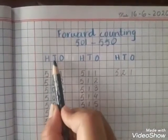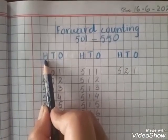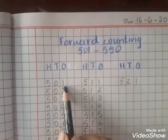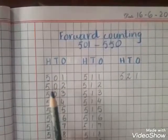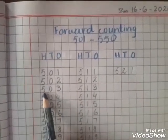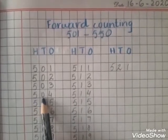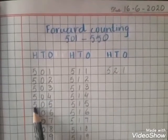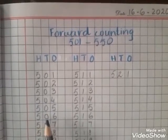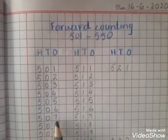Do you know what is meant by H T O? O stands for ones, T stands for tens, and H stands for hundreds. So we have: five hundred and one, five hundred and two, five hundred and three, five hundred and four, five hundred and five, five hundred and six, five hundred and seven, five hundred and eight, five hundred and nine, five hundred and ten.